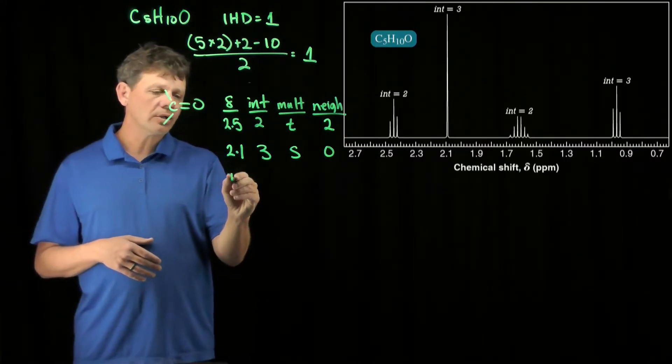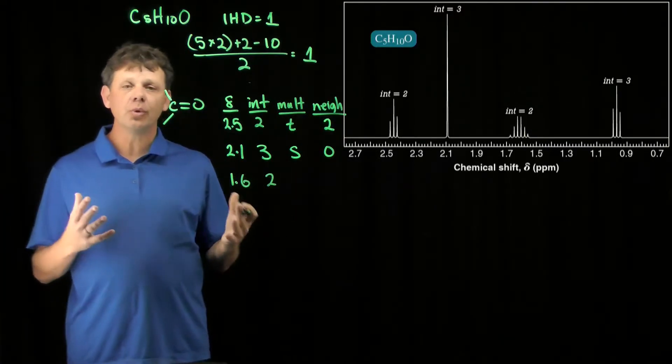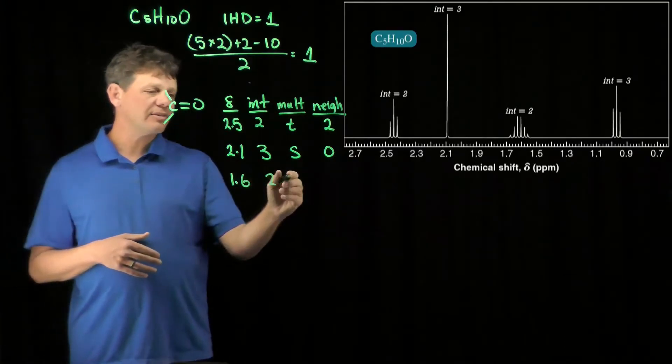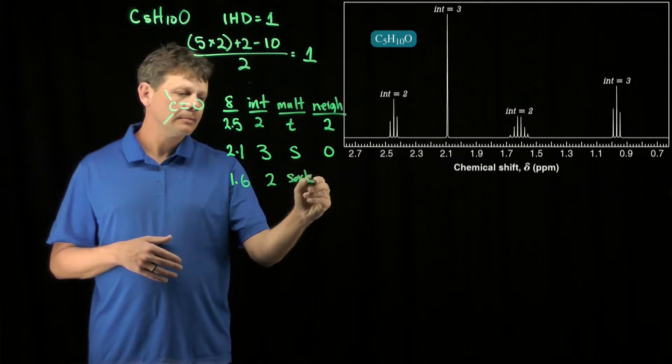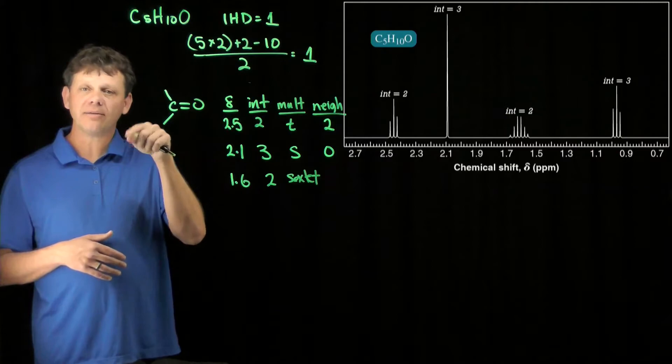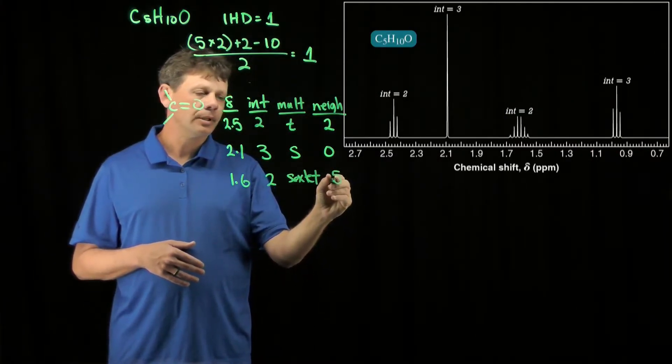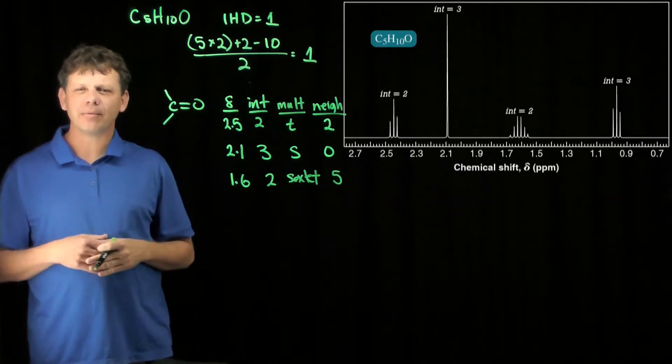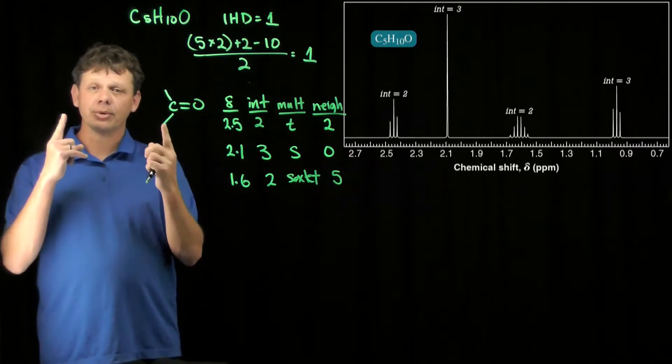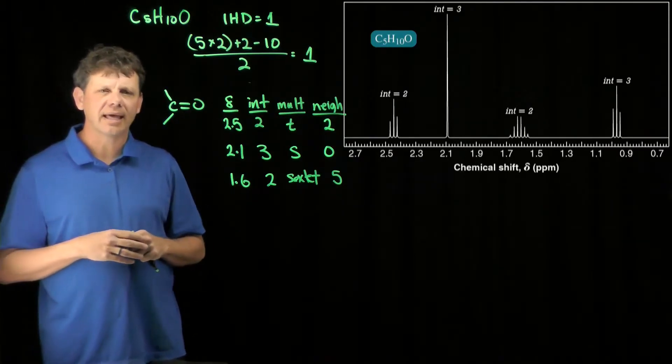The next peak we'll look at is at a chemical shift of around 1.6. It integrates to two, so two hydrogens are responsible for giving that signal. It is a sextet. Being a sextet, n minus one, six minus one is five, there are five neighbors. How could you have five neighbors? Carbon can only have four hydrogens. To have five neighbors means you probably are between two carbons with three and two hydrogens.